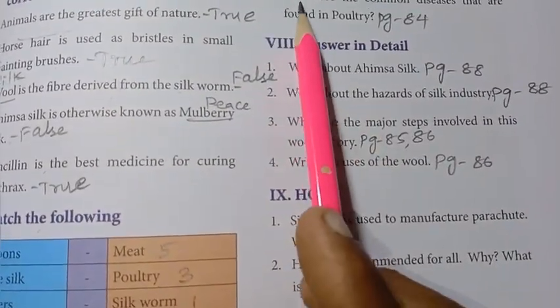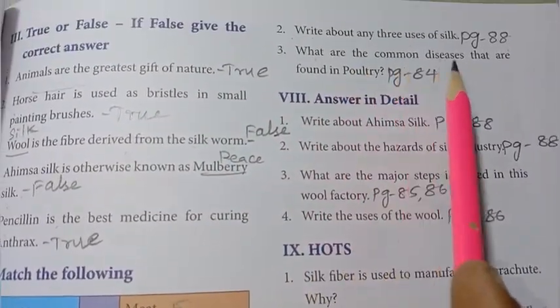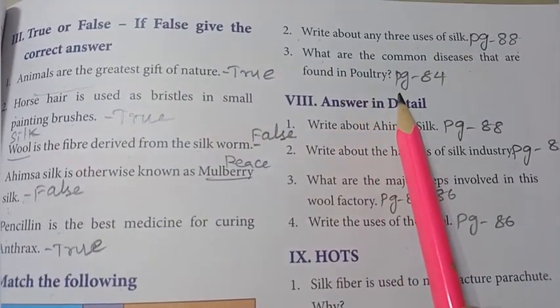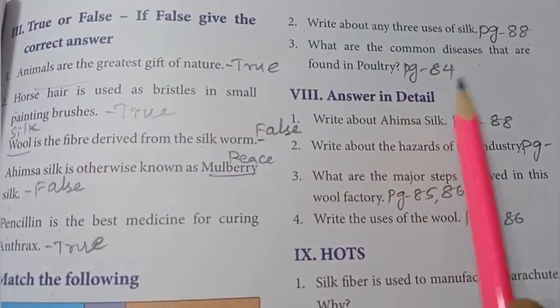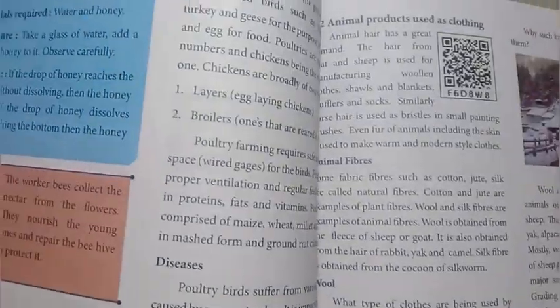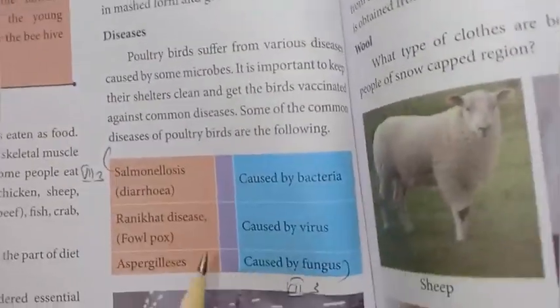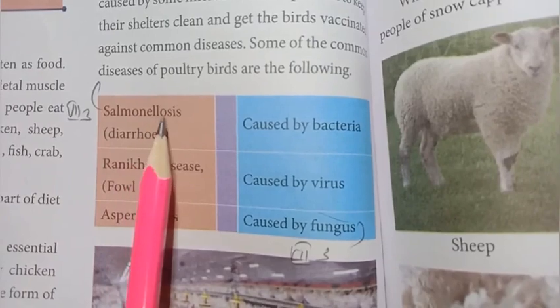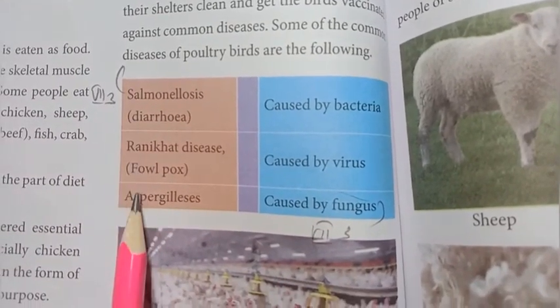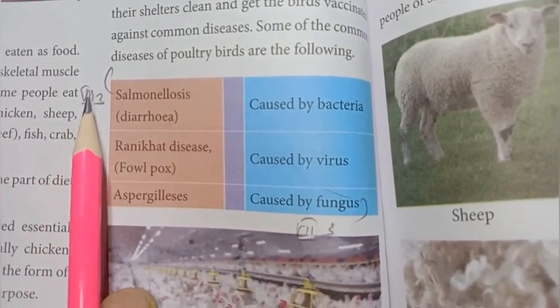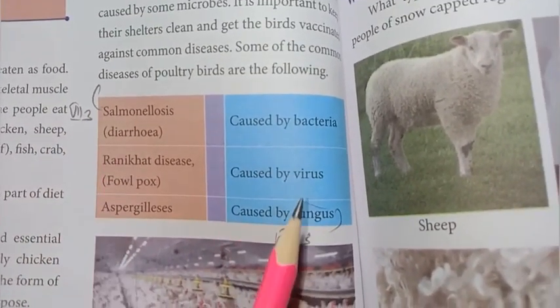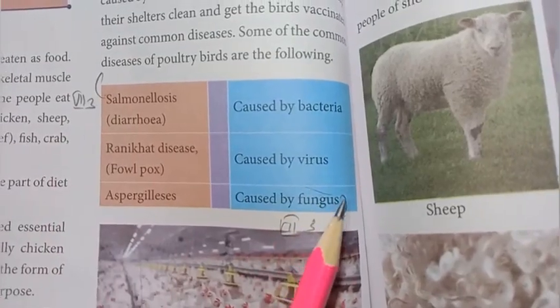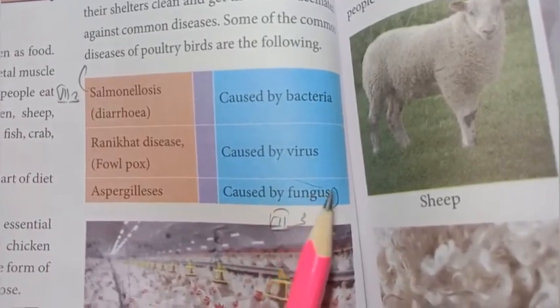Roman Numeral 7, 3rd question: What are the common diseases found in poultry? Page number 84. Answer: Salmonellosis, caused by bacteria, is one of the common diseases. Roman Numeral 7, 3rd question answer covered in three lines.